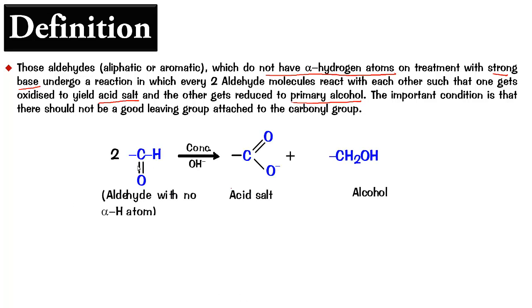So two molecules of the aldehyde react with concentrated base. One becomes acid salt, other becomes alcohol. So now why we are using a high concentration OH- we will just come to know once we read the mechanism. And essentially what we are trying to do is, the aldehyde should not have the alpha hydrogen. Because if you have alpha hydrogen, you end up getting an aldol reaction.